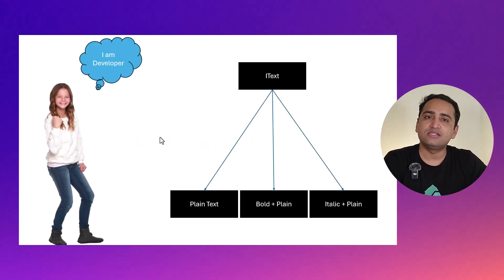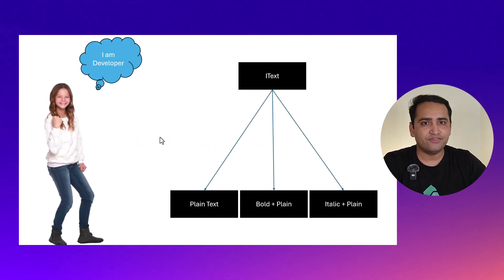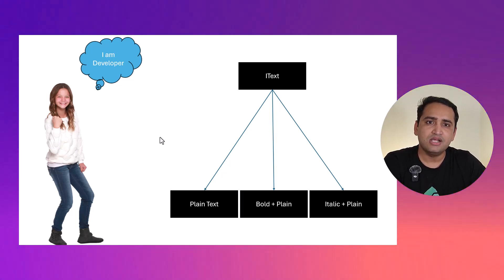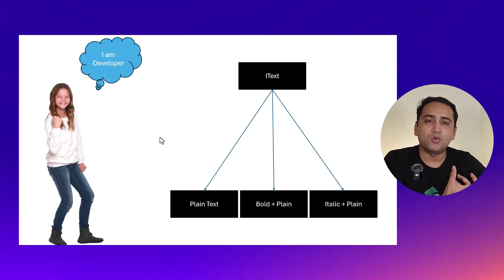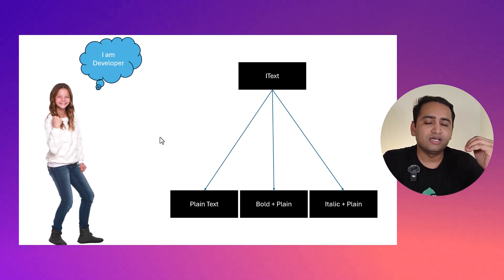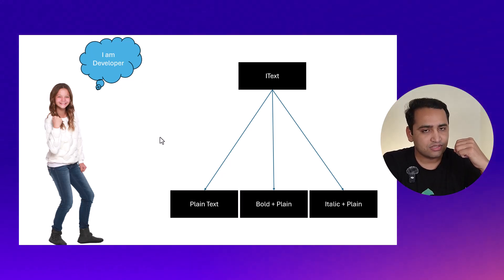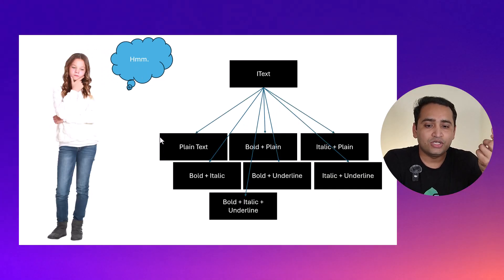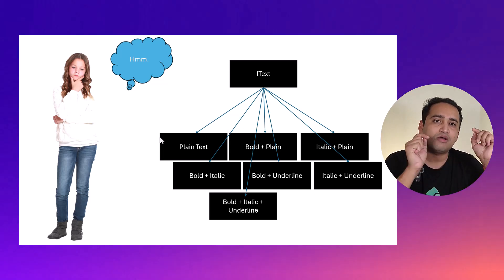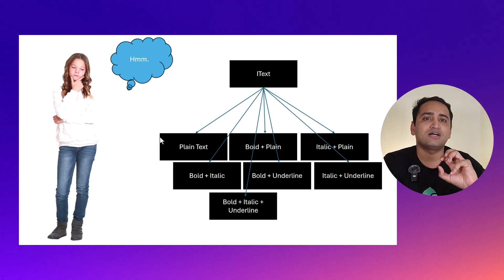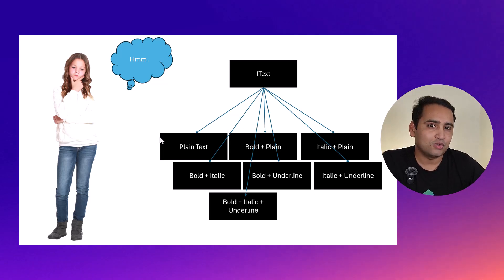First let's understand what will happen if I'm not using the Decorator design pattern and using the basic approach. We can start with one interface called IText, with one method called render. There will be a class PlainText, then BoldText, then ItalicText — three classes all inheriting from IText. So far everything is fine, but if I want more features — plain text, bold plus plain, bold plus italic — and because order matters, I have to create a class for each specific combination.